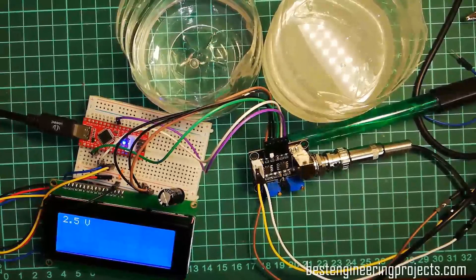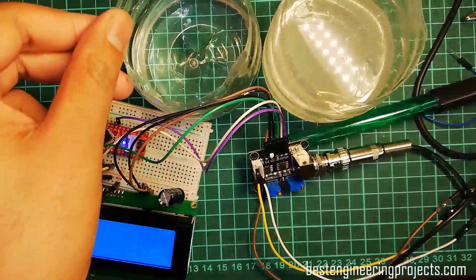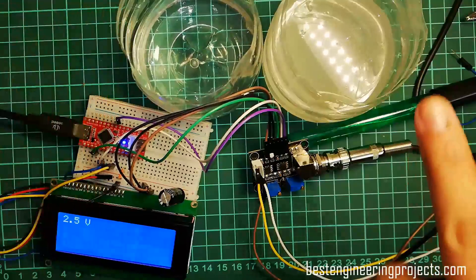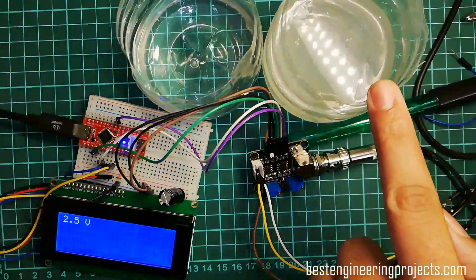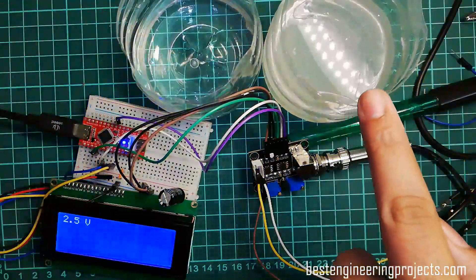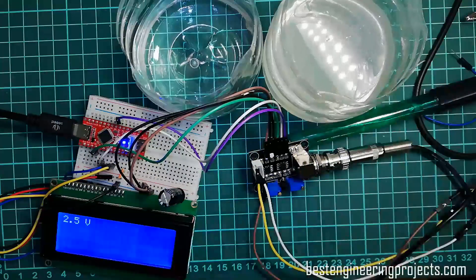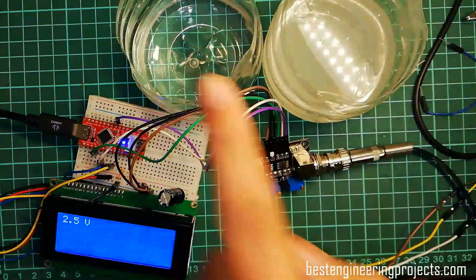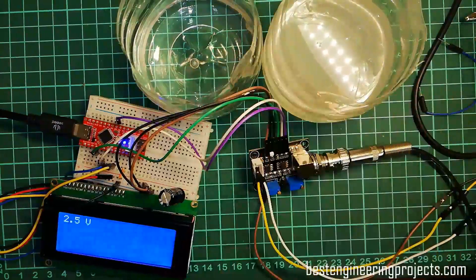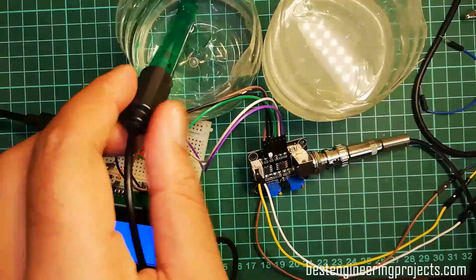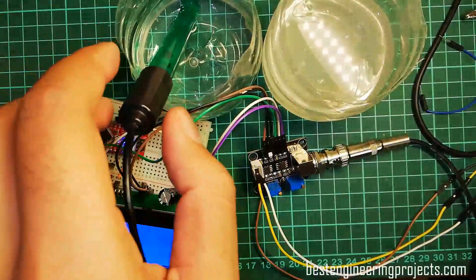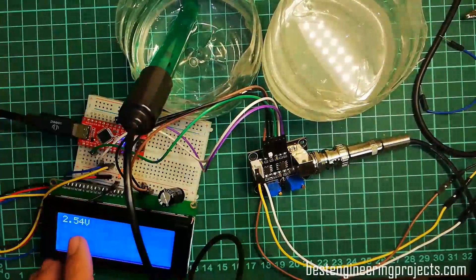One is of pH 6.86, whereas another is of pH 4.01, that is the buffer solution of Borax. Now, let's immerse this electrode. At first, I immerse this electrode into pH solution 6.86 and it shows the reading of 2.54 volts.